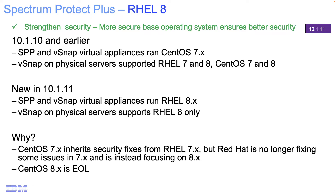For those of you who are users of the product, you know that Spectrum Protect Plus can be run on all virtual appliances or a combination of virtual appliances and physical servers for the vSnap. The earlier versions of the product used CentOS 7.X as an operating system for the virtual appliances, but that operating system has stopped inheriting fixes from Red Hat, and thus it's not being patched anymore. Red Hat is instead focusing on Red Hat Enterprise Linux version 8 for all of the fixes that they are releasing.